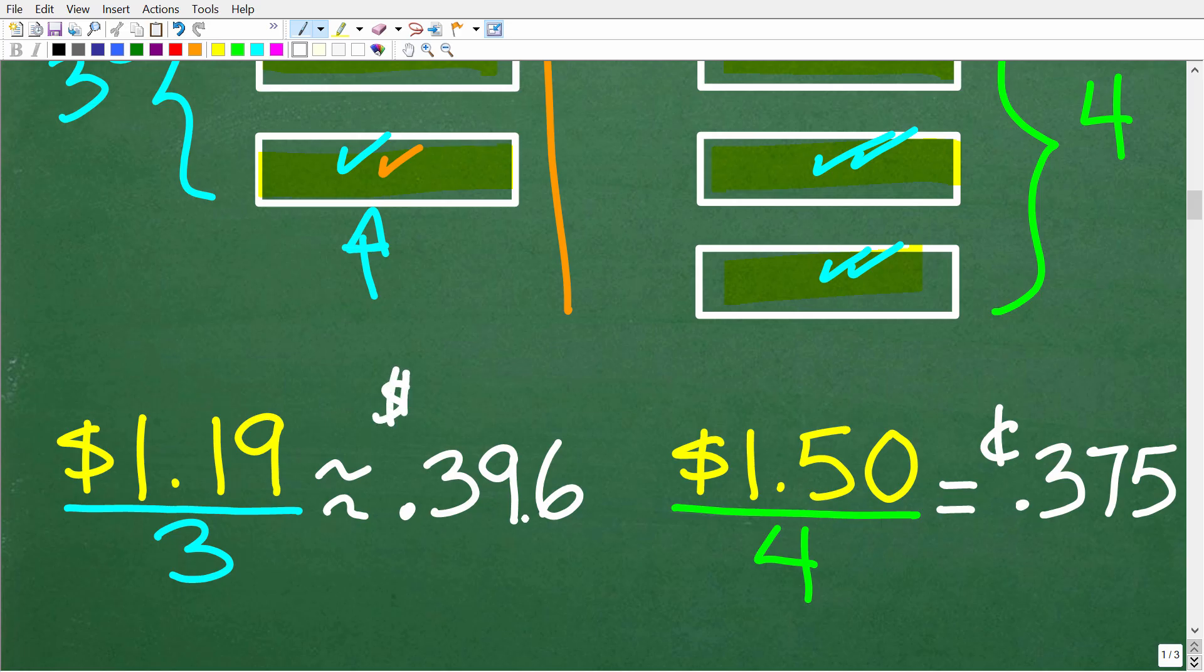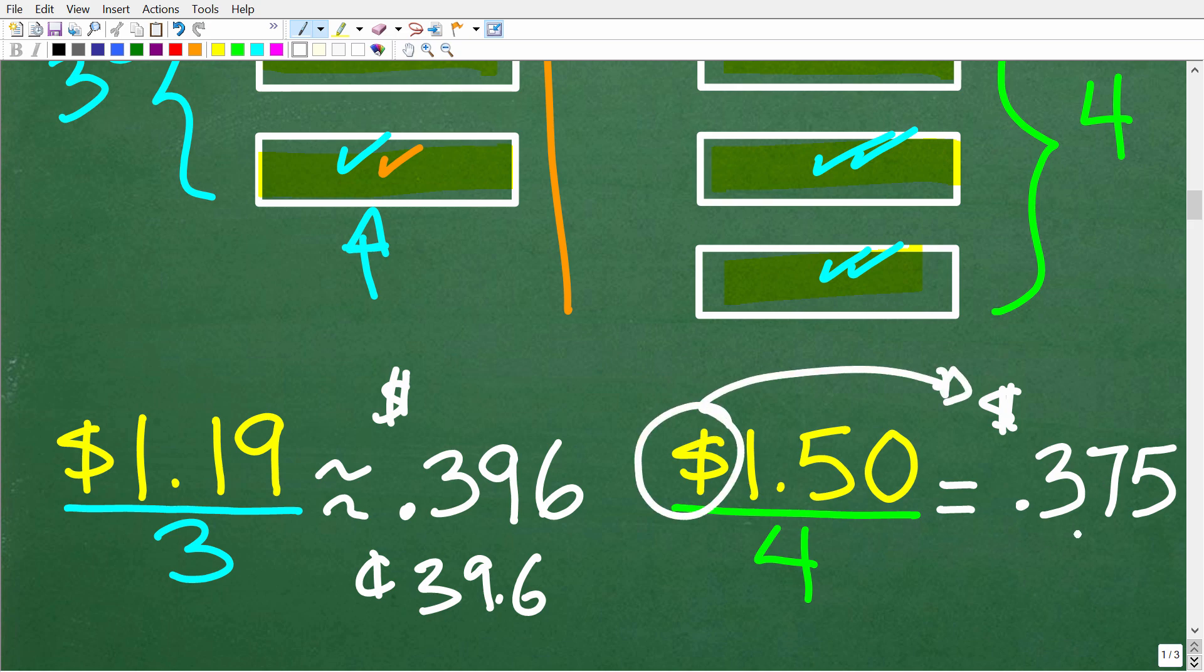But 0.396 of a dollar is 39.6 cents, so I'm kind of correcting this in real time here. So let me go ahead and change this over here. So $1.50 divided by four is 0.375 of a dollar. So we're not doing anything with the units of measure. We're still talking about dollars, but this is the same thing as 37.5 cents.